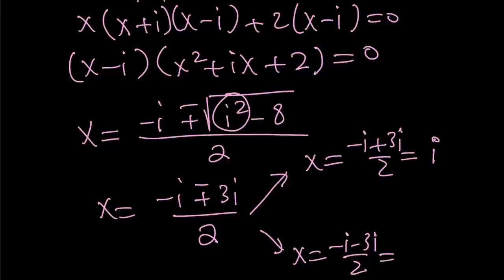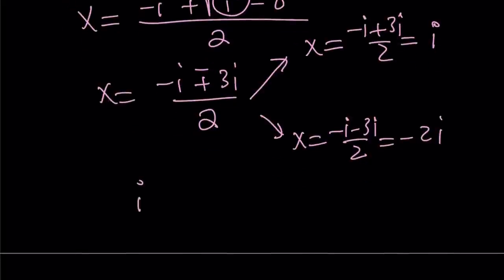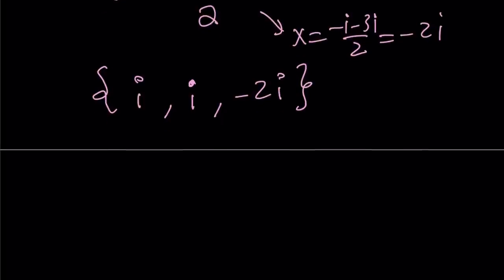So x equals -b plus minus the square root of b², which is i², minus 4ac, that would be 8. i² is -1, -1 minus 8 is -9, and the square root of -9 is just 3i. From here we get either -i + 3i over 2 or -i - 3i over 2. This one gives us i, and this one gives us -2i.